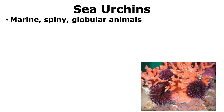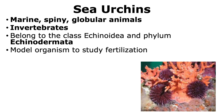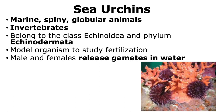Sea urchins are marine spiny globular animals that are invertebrates. They belong to the class Echinoidia and the phylum Echinodermata, the same phylum where we can also find starfish. Sea urchins have been used as a model organism to study fertilization. In the case of sea urchins, the male and female gametes are released in water.